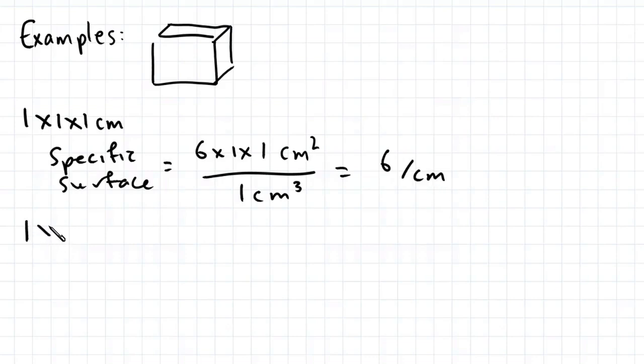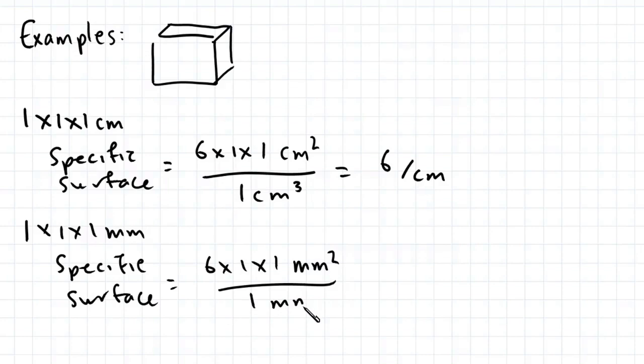Now if we have a 1 by 1 by 1 millimeter cube, the specific surface works out to be 6 by 1 by 1 square millimeters divided by 1 cubic millimeter. This works out to be 6 per millimeter.